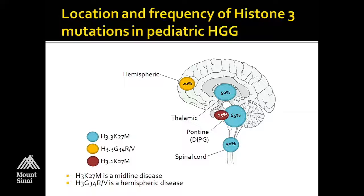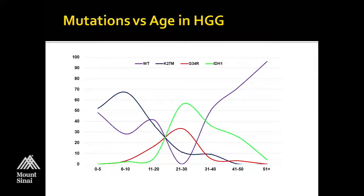From a basic science and tumor genesis perspective, this raises all kinds of questions about cell of origin and what differences exist between the cells that form midline versus hemispheric structures that make them susceptible to mutation in one histone gene or another. If we look at when these occur, there are also interesting differences. The K27M mutations really peak during early childhood, into the teens, with a long tail out.